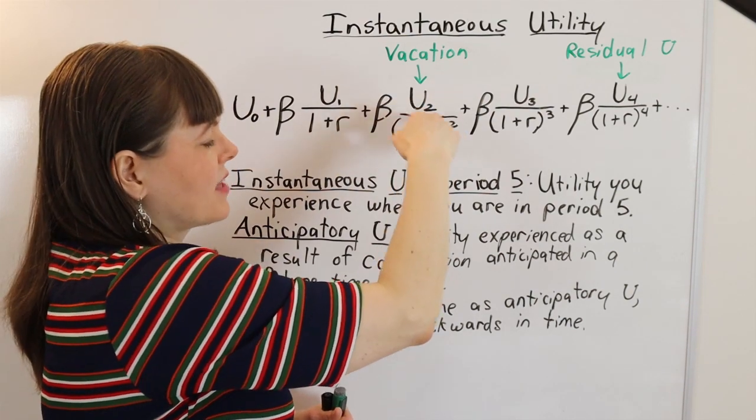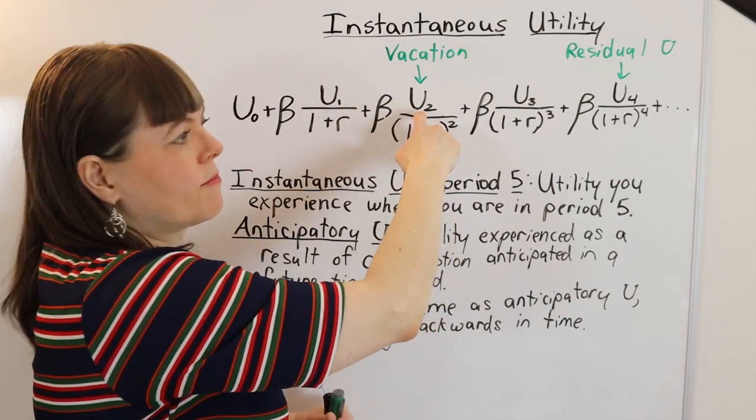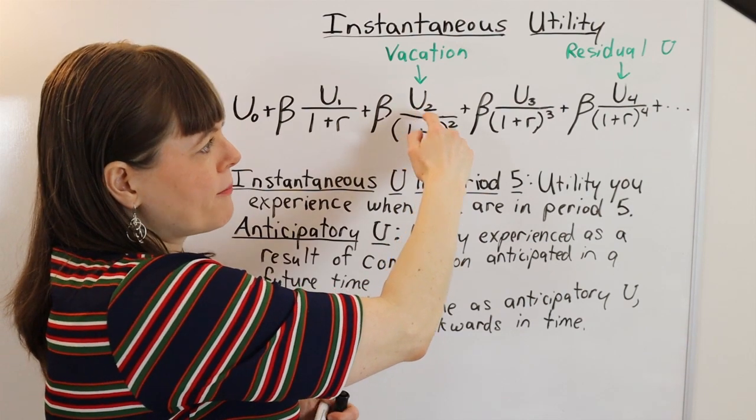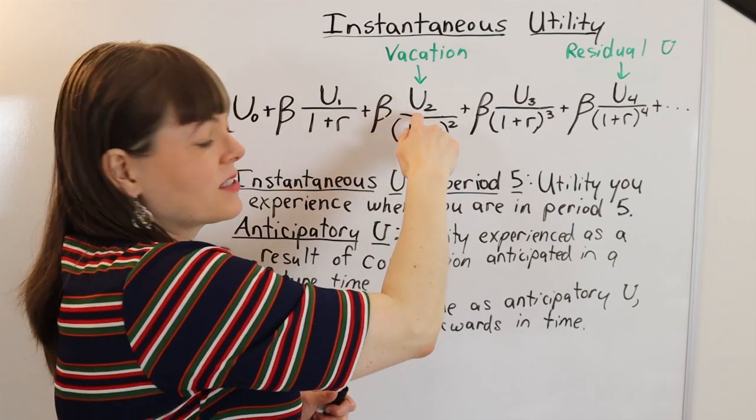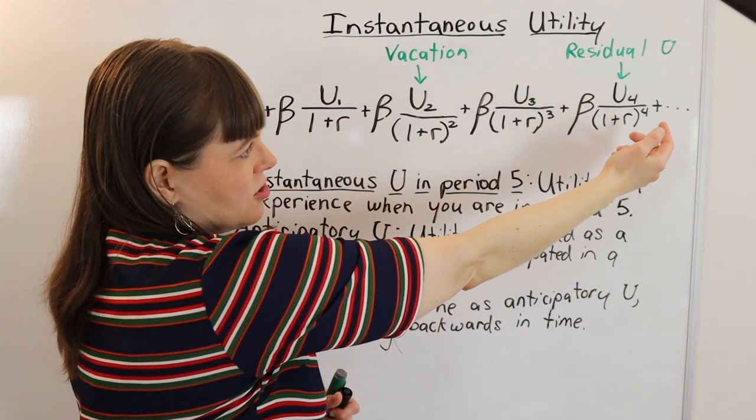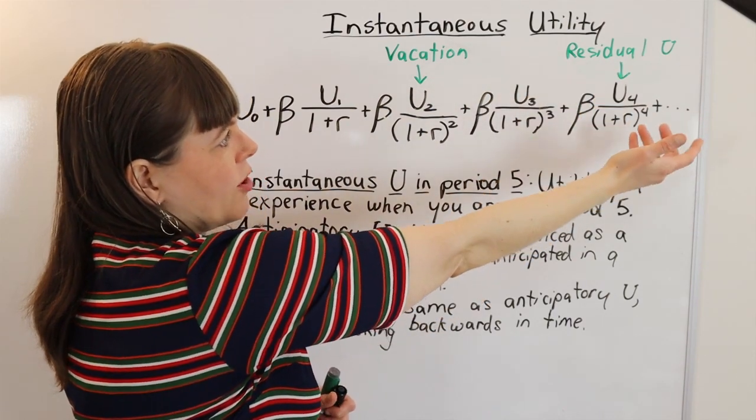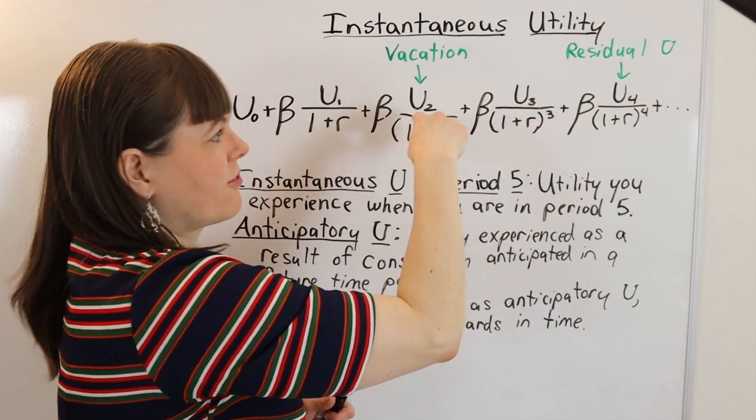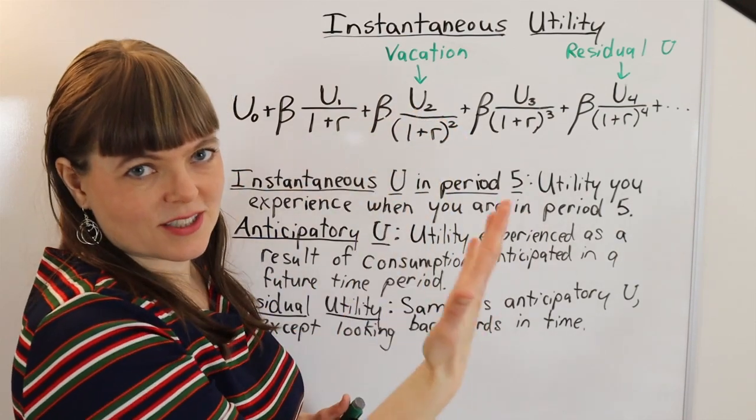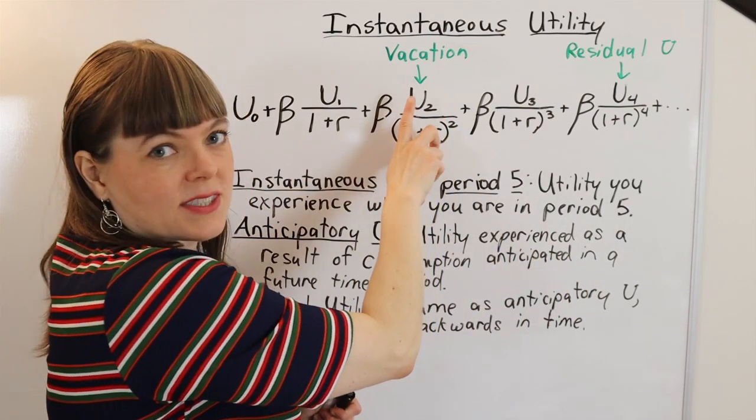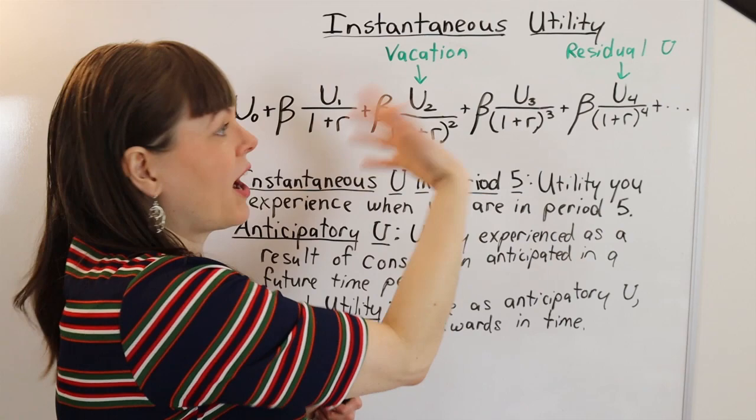And the way I explain this is that remembered utility is about the assessment of utility. It's about how do you assign utility to the time period in period two. So for remembered utility, it's still about what is the utility for that vacation, you're just thinking forward and assessing this value after the fact. Whereas experienced utility is how would you assess it right in the moment when you're having that vacation.